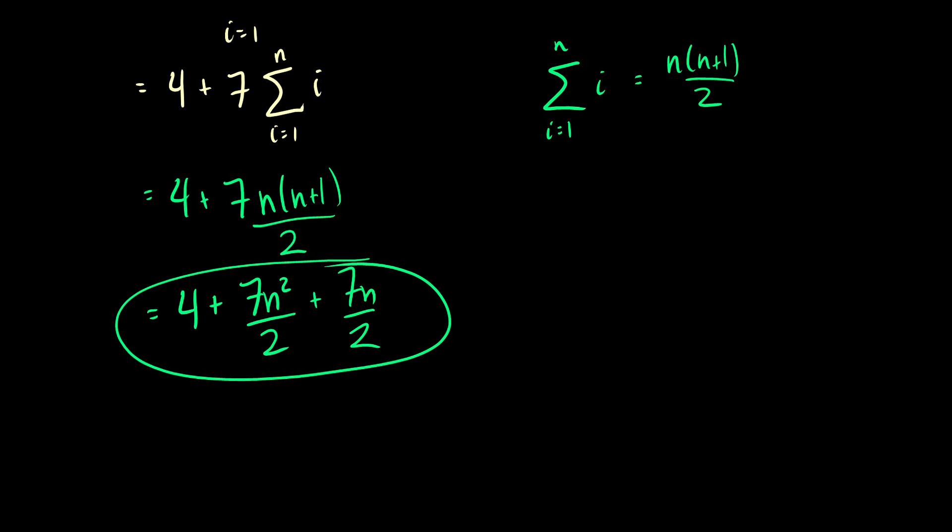So you could do the other method of finding anp plus anh and doing all that nonsense. However that is much slower than remembering that an minus an minus 1 equal to some function on n has a simpler solution.